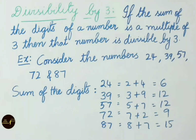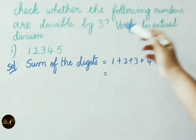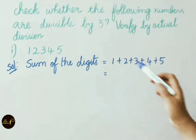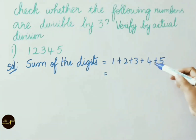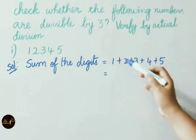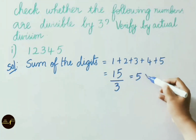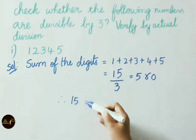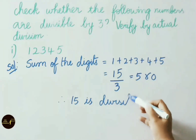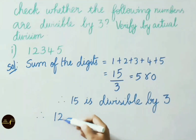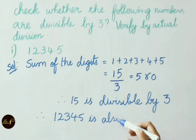Now let us see examples on divisibility by 3. Check whether 12,345 is divisible by 3; verify by actual division. To test divisibility by 3, first we find the sum of the digits: 1+2+3+4+5. That is 5+4=9, 9+3=12, 12+2=14, 14+1=15. Now this sum 15 we divide by 3: 3 times 5 is 15, leaves remainder 0. Therefore 15 is divisible by 3, and so the given number 12,345 is also divisible by 3.